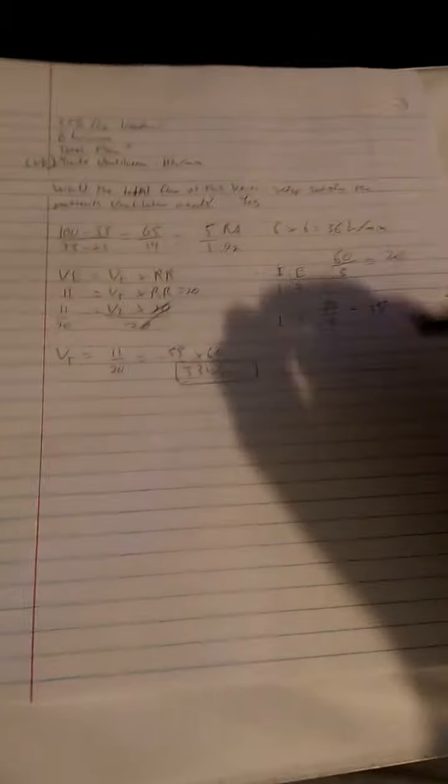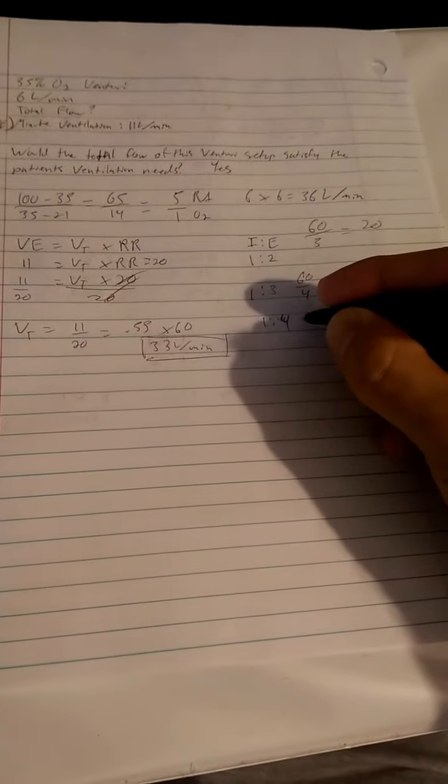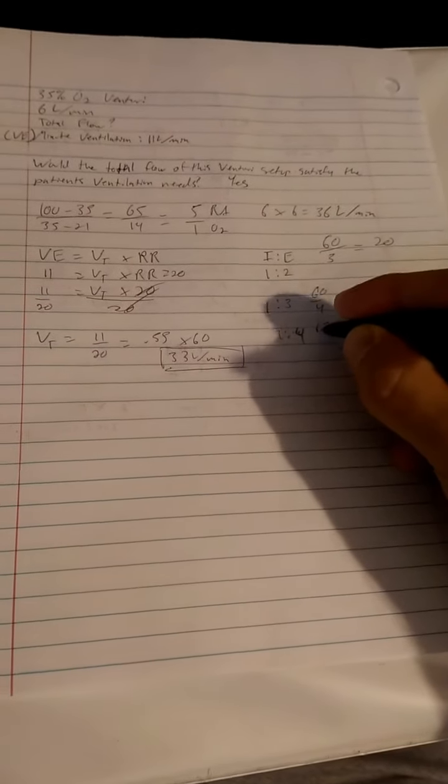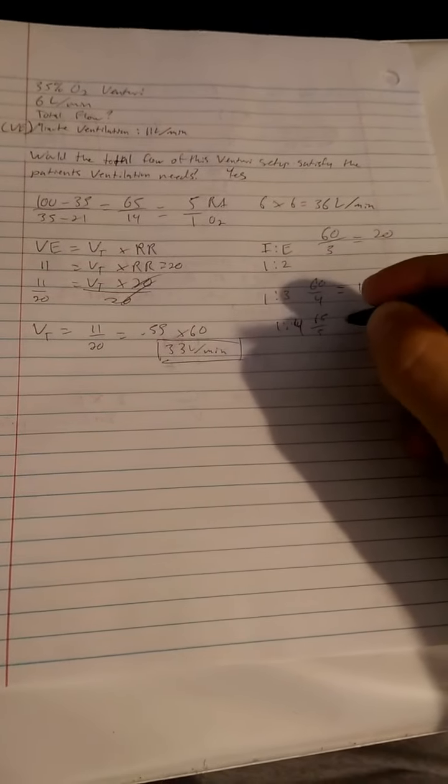If someone has really bad emphysema, let's say it's a 1 to 4. Now you have 60 divided by 5. You see what's happening? It's not going well for them. Now it's down to 12.